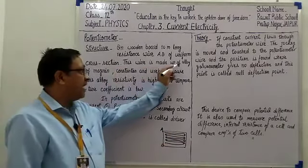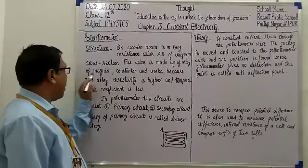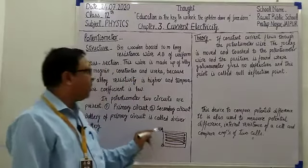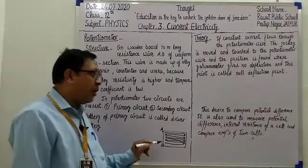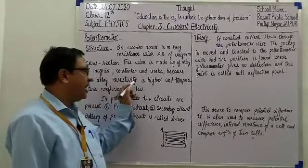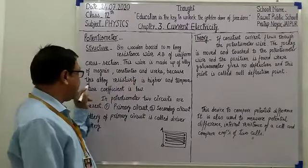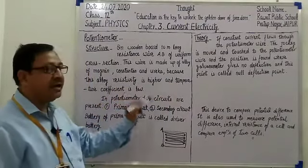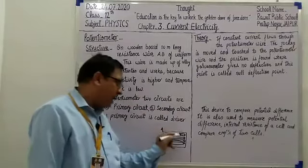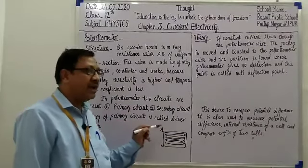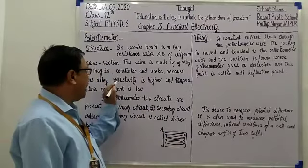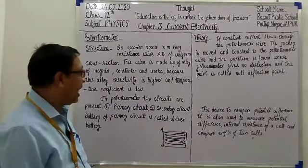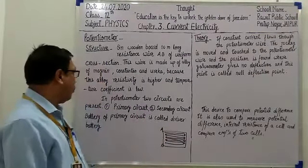This wire is made up of alloys of manganin, constantan, and eureka. That is, this 10 meter long wire is made of alloys like manganin, constantan, and eureka. Because these alloys have higher resistivity and a low temperature coefficient. These alloys — like manganin (nickel, cobalt mixed), eureka, constantan — their resistivity is higher and temperature coefficient is low.